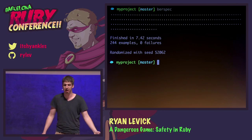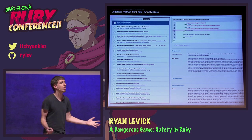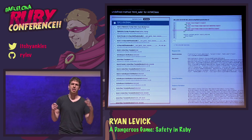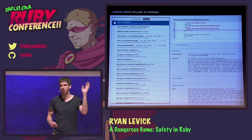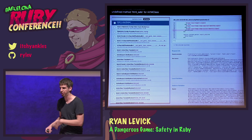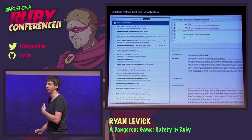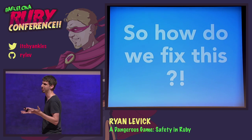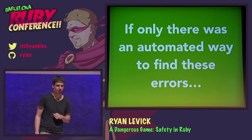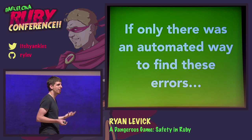We still end up with errors, though. We have all these services out there where we catch exceptions in production, and on Monday morning — because it's Friday and we don't want to deal with it — we'll come back and fix this error. Until then, our customers will be experiencing this exception. So how can we fix this? If only there was an automated way to find these errors.